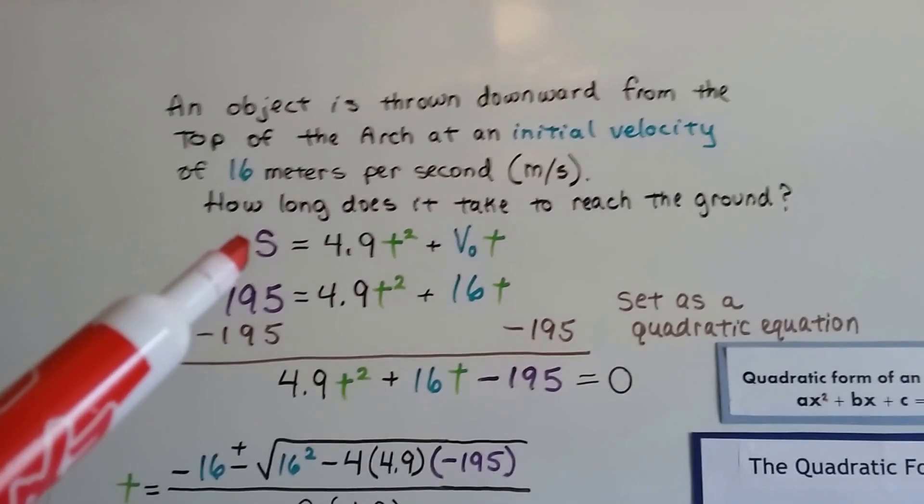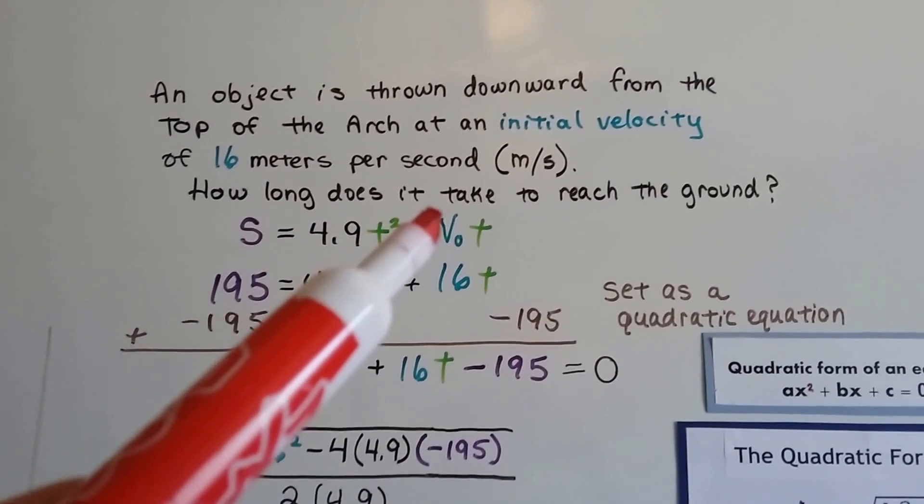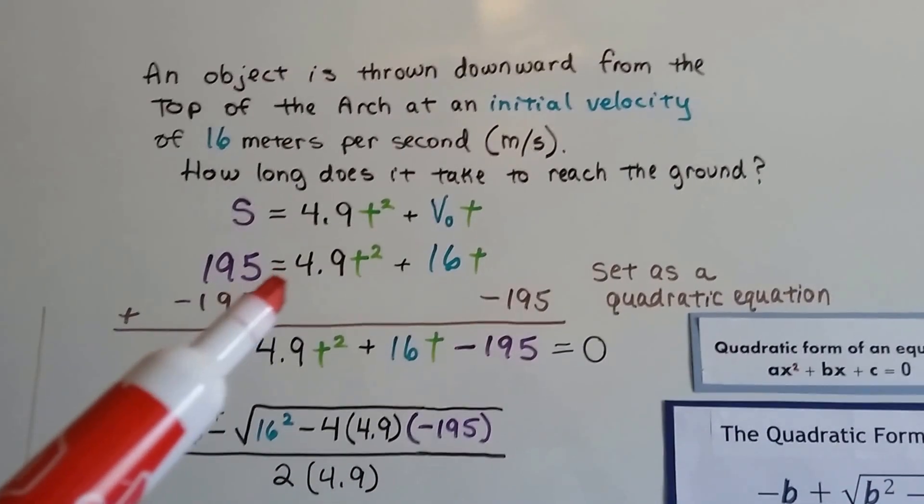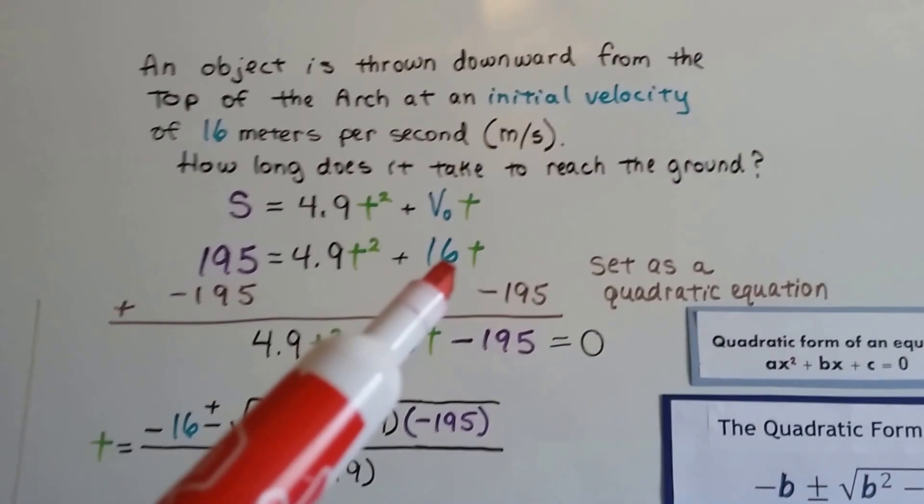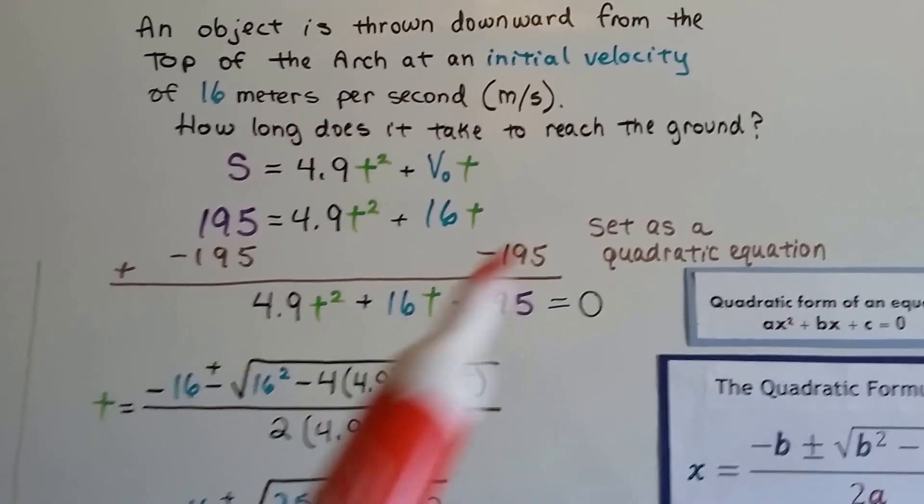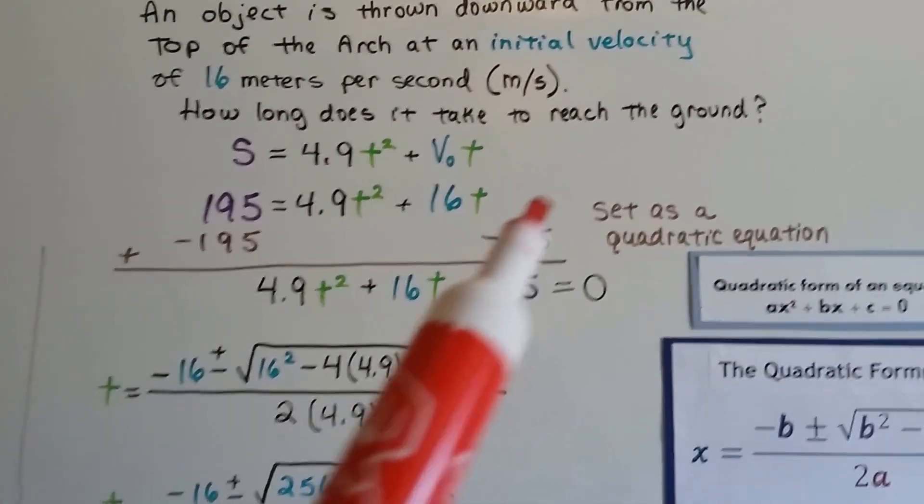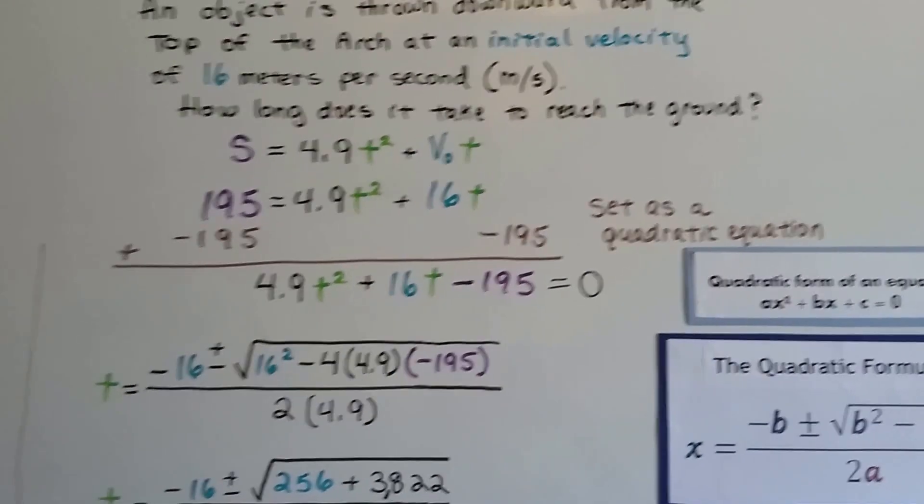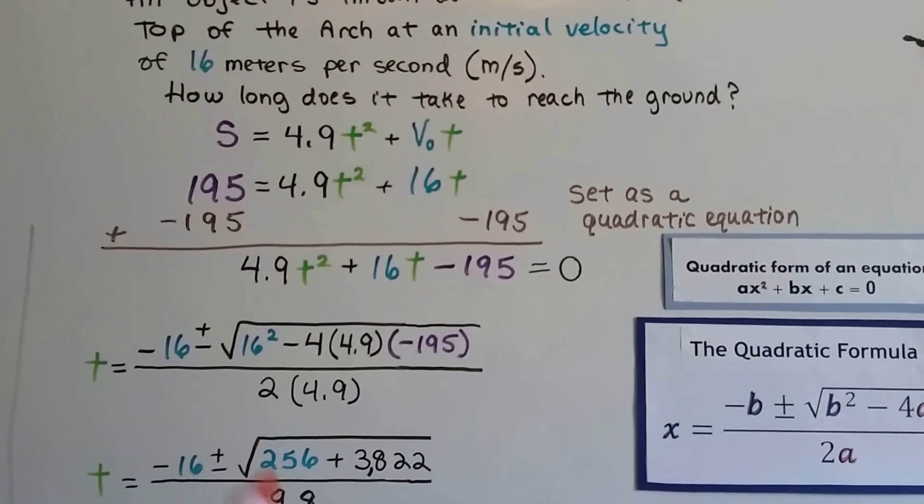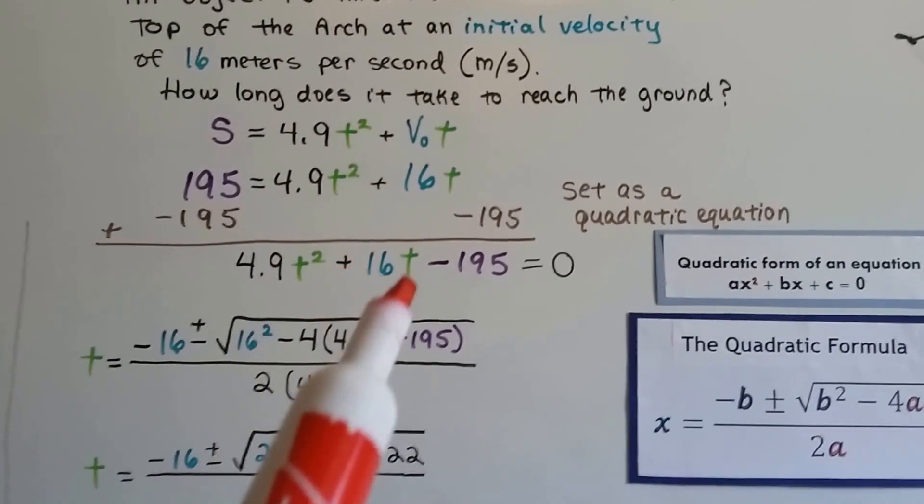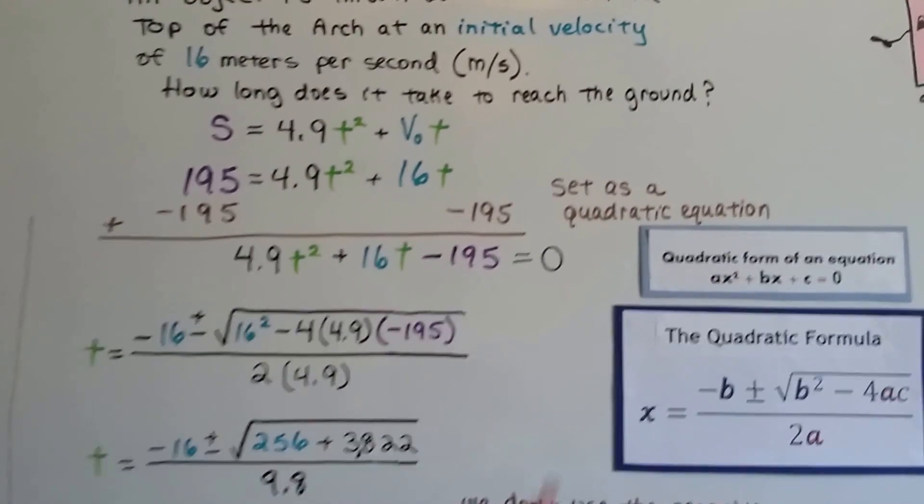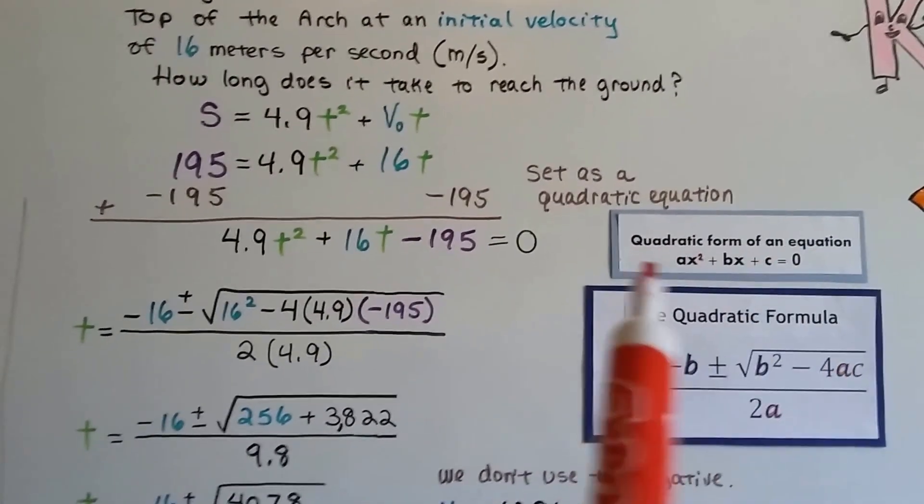Our formula was s equals 4.9 times t squared plus v sub zero t. Now we're going to put 195 equals 4.9 times t squared plus 16 t. We can subtract 195 from each side because we want to set it as a quadratic equation. Now that creates a zero here. We have 4.9 times t squared plus 16 times t minus 195 equals zero. So now it's in this quadratic form of an equation, that standard form.